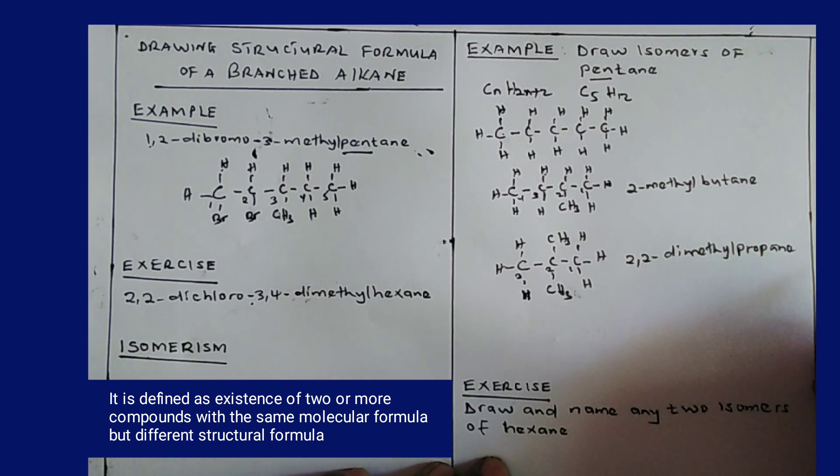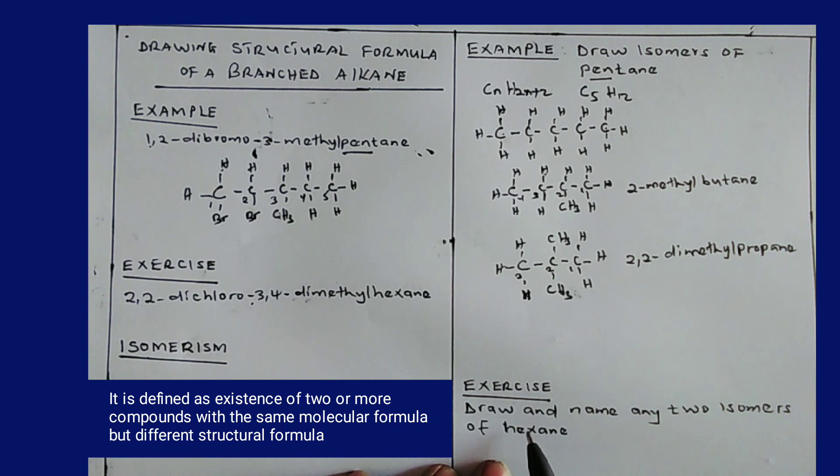Learners, that is the end of the lesson. So we will leave you an exercise here. You are told draw and name any two isomers of hexane.